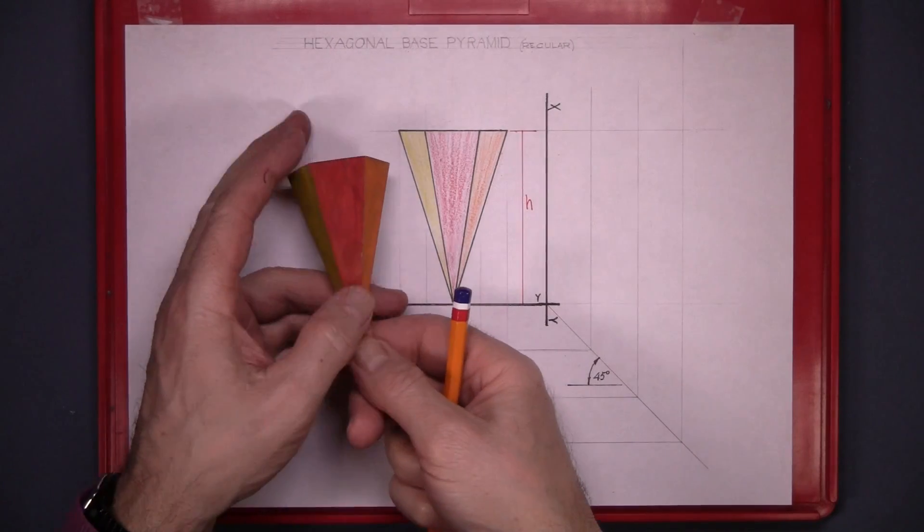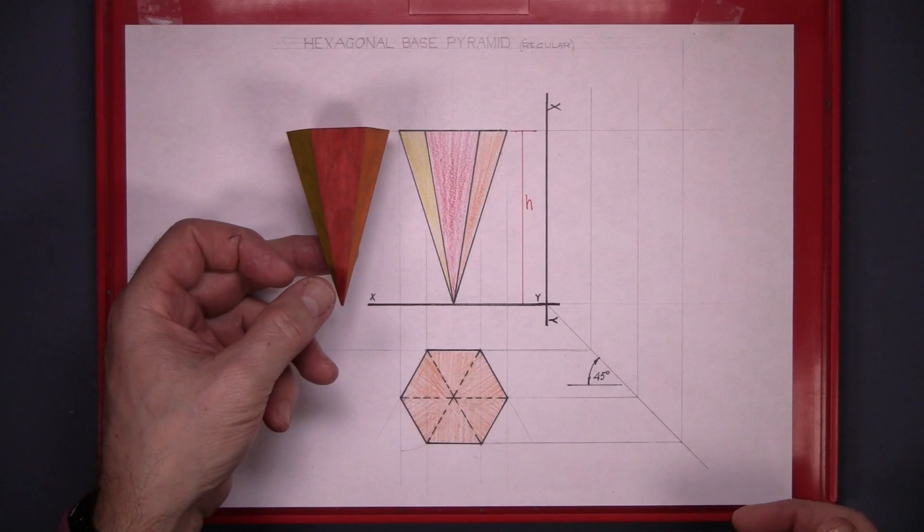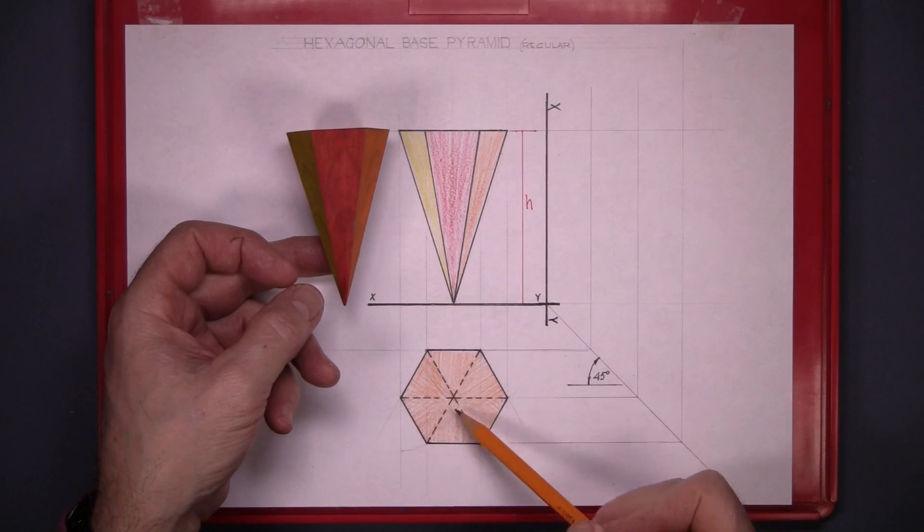This is what we see now, colored in, and the dotted lines in the plan.